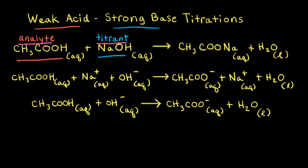When acetic acid reacts with sodium hydroxide, the products are an aqueous solution of sodium acetate and water. Because acetic acid is a weak acid, it does not ionize completely in aqueous solution. Therefore, for our complete ionic equation, we simply write acetic acid — we don't show it as being ionized.